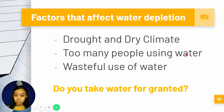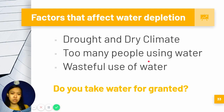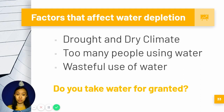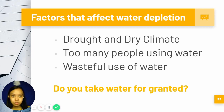There are different factors that affect water depletion. First of all, the drought and dry climate that we experience. Aside from that, the continuous booming in population will of course affect water usage, because more people means more water use. And of course, how wasteful people are with water will also affect the supply.